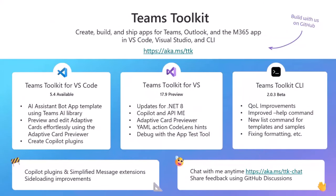For Teams Toolkit: version 5.4 is available for VS Code with new templates, a way to preview Adaptive Cards, and the ability to create Copilot plugins. A new preview for Visual Studio 17.9 is coming soon with .NET 8 support in templates, plus the App Test Tool, YAML actions, and more features from the VS Code toolkit being brought over. For the CLI, quality-of-life improvements continue, with focus on more Copilot plugins, simplified message extensions, and improving side-loading.